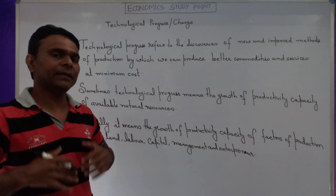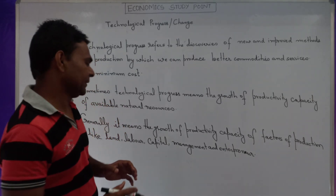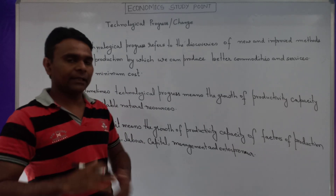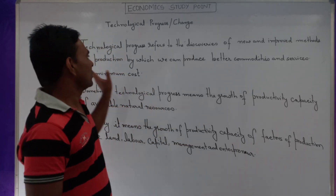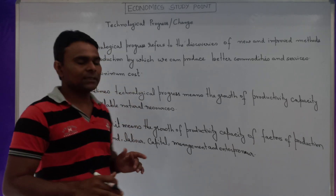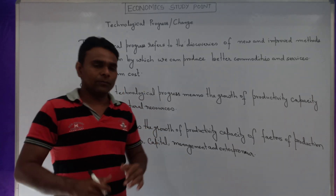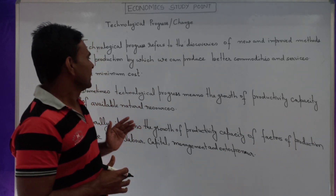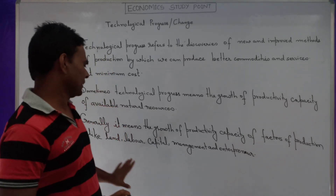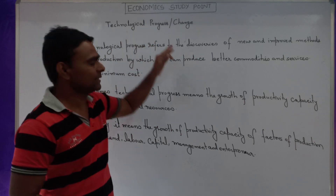The productivity capacity of the combined input of all factors is known as total factor productivity, and technological change means growth of total factor productivity. Another way we can define it: technological progress means growth of output per head. In other words, technological change or progress is the change of production process by which we can increase output per unit level.